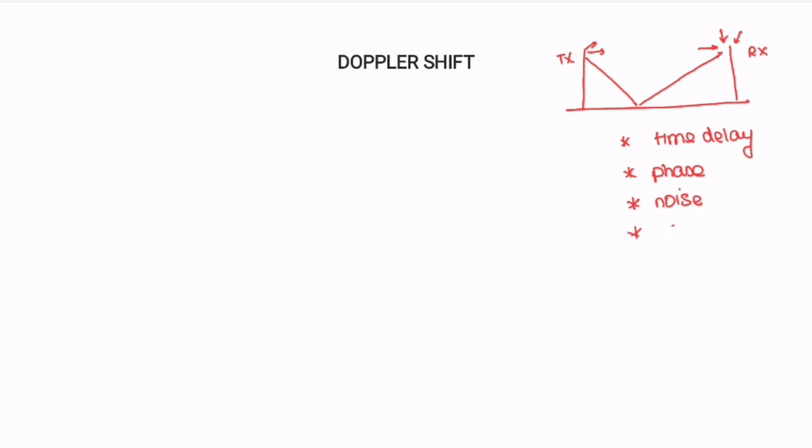Next, there will be a change in frequency. These are the four major differences in the received signal: time delay, phase, noise, and frequency change.